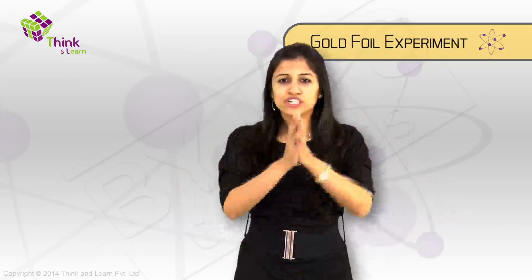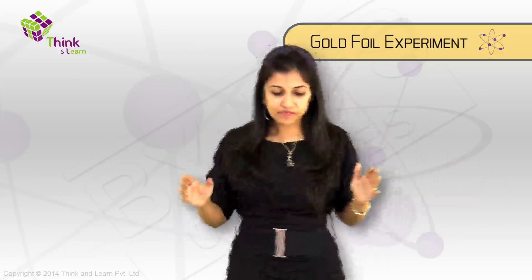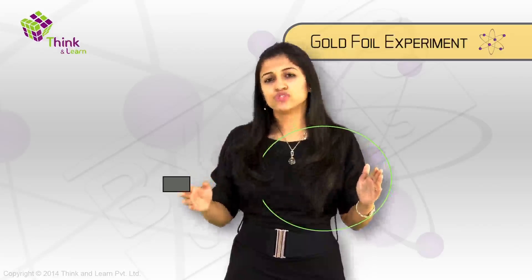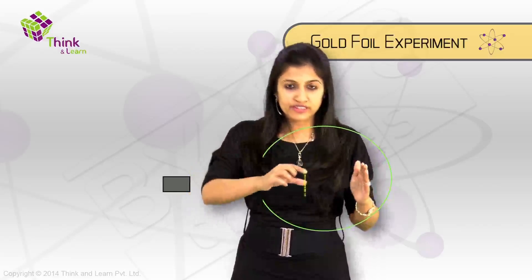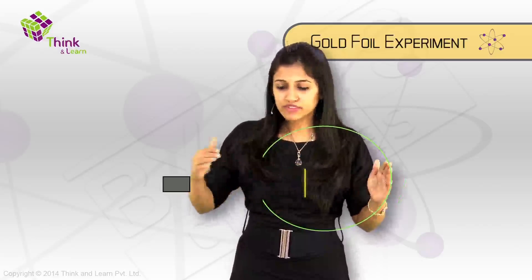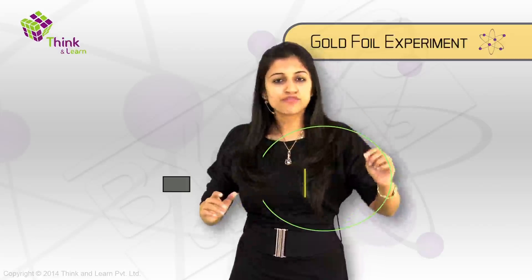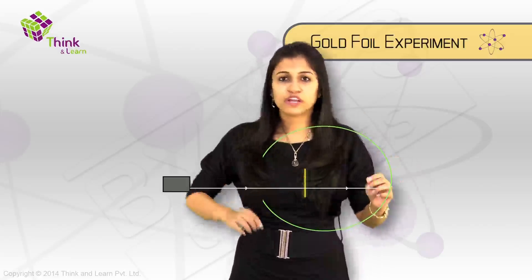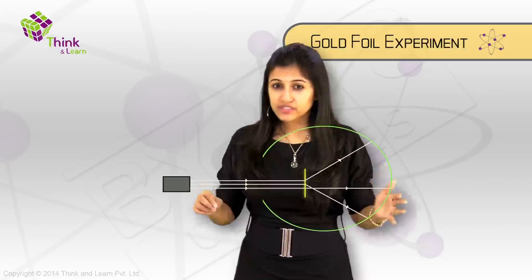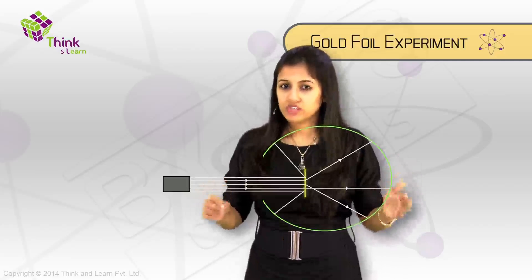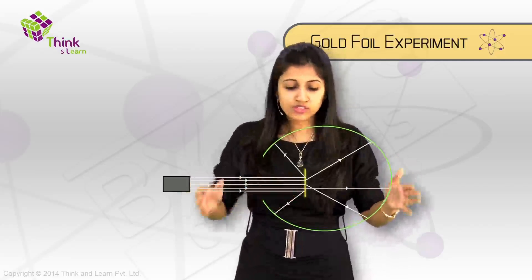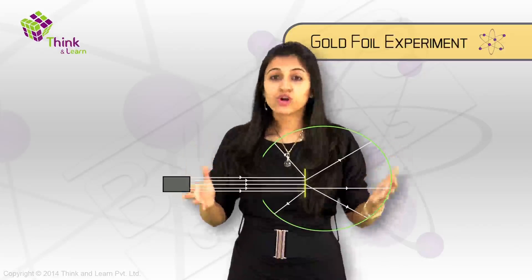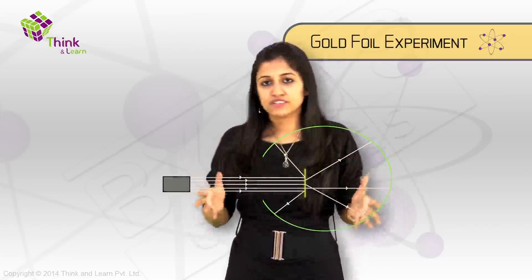We can summarize what they saw with a diagram like this. Here is the circular detector screen, and here's the alpha particle emitter — something like a gun which shoots out the alpha particles — and the gold foil is right in the center. Most of the time, the alpha particle would go right through and hit directly behind. But sometimes, just sometimes, they would deflect off to the side, and some of the rays would actually bounce right back. These lines are indicative of the different paths the alpha particles actually took on hitting the gold foil.